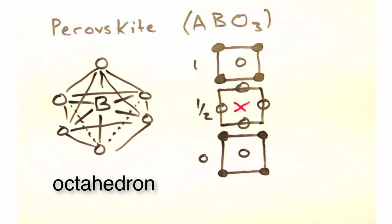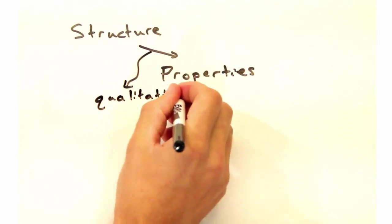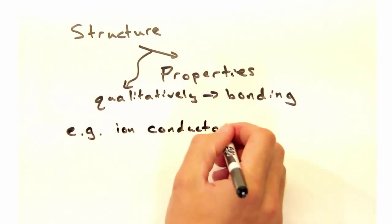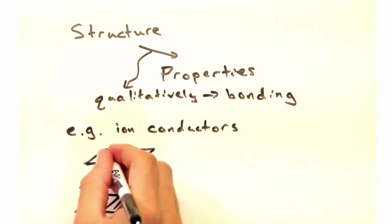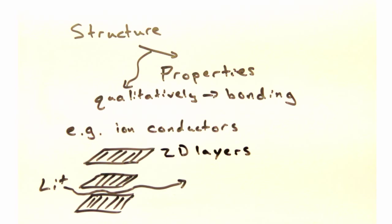You know, it's all well and good to visualize structure, but how does this tell me anything about properties? How we rationalize properties, at least qualitatively, often comes from the type of bonding in a crystal, rather than from first principles calculations. For example, an ion conductor might exhibit channels or layers for ions to move in.